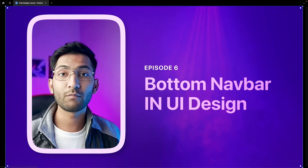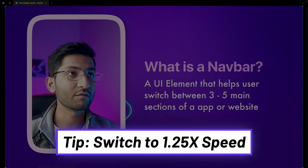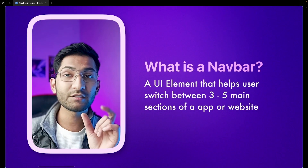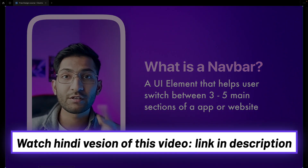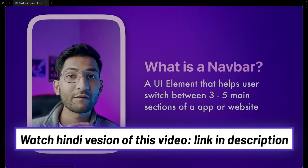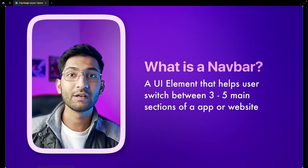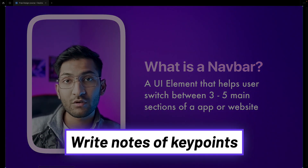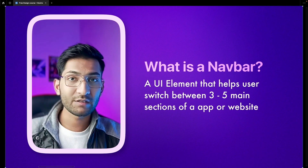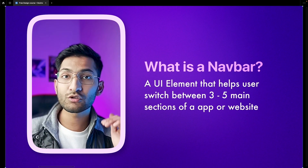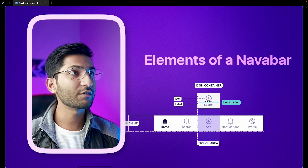This is episode 6 and today we are covering bottom navbar or mobile navbar in UI design. A navbar is a UI element that contains three to five main sections or the main parts of any app by which users can navigate or switch between them. For example, on Instagram we have the home button, explore button, add button, reels button, and profile section. We put only the most important elements of the app in the navbar — we cannot put random elements like the settings page.